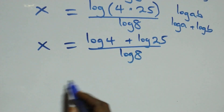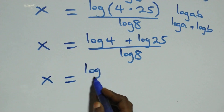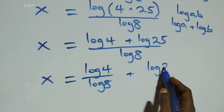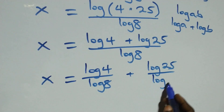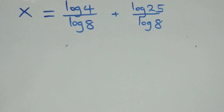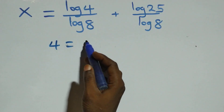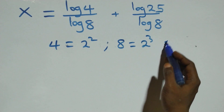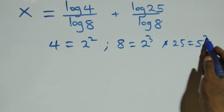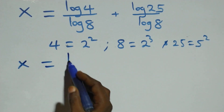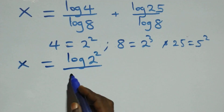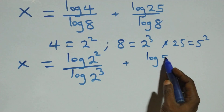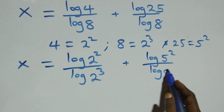We separate this into two fractions: x equals log 4 over log 8 plus log 25 over log 8. Then we express 4 as 2 squared, 8 as 2 raised to power 3, and 25 as 5 squared. So we have x equals log 2 squared over log 2 cubed, plus log 5 squared over log 2 cubed.